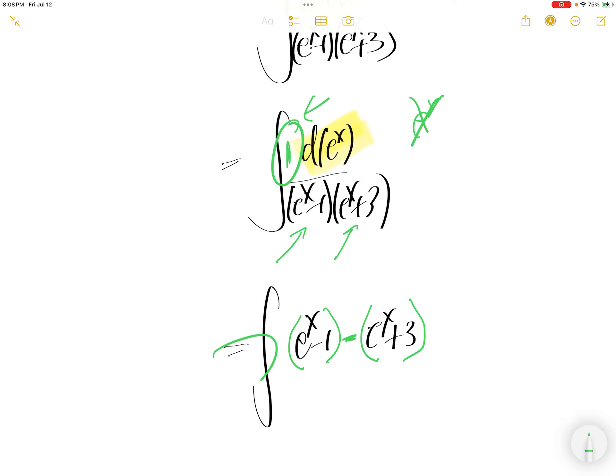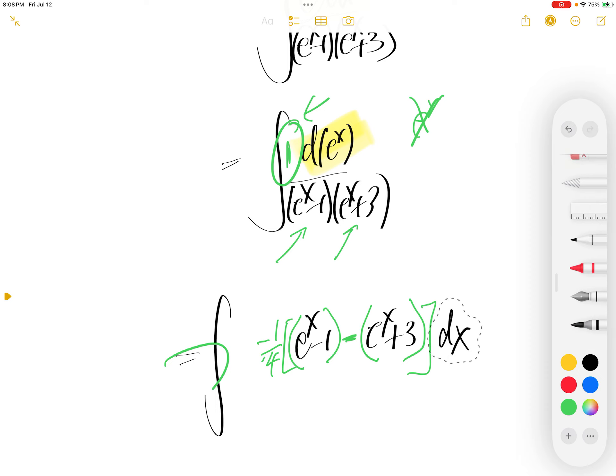So we need to correct by dividing by 1 quarter, right? Here you have dx. Generally by e to power x minus 1, e to power x plus 3.